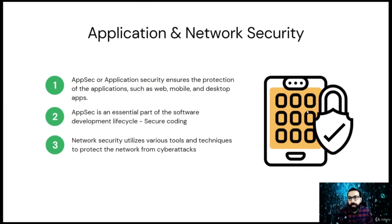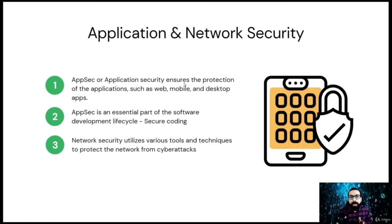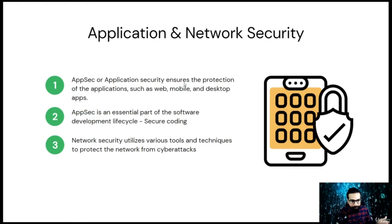Next is application and network security. Application security refers to the steps businesses take to identify, repair, and protect applications against security vulnerabilities. In short, application security is the process of making apps — whether cloud-based or desktop — more secure by finding, fixing, and enhancing their security. Much of this happens during the development phase, but it includes tools and methods to protect apps once they are deployed.